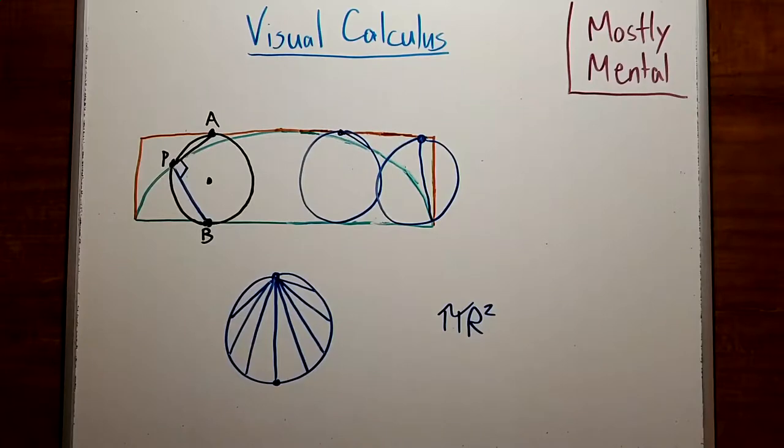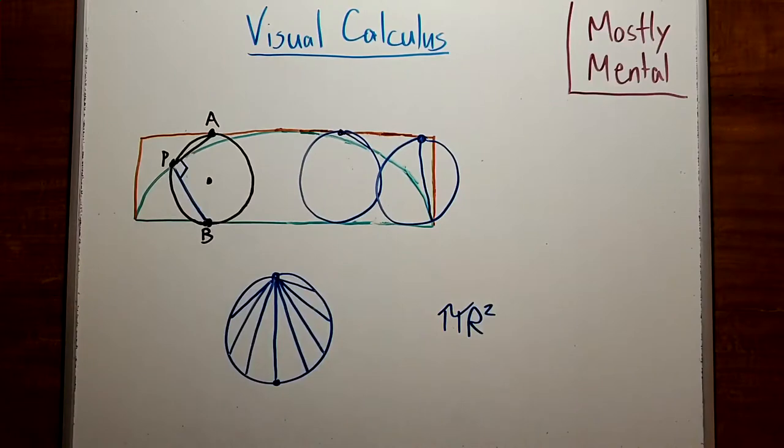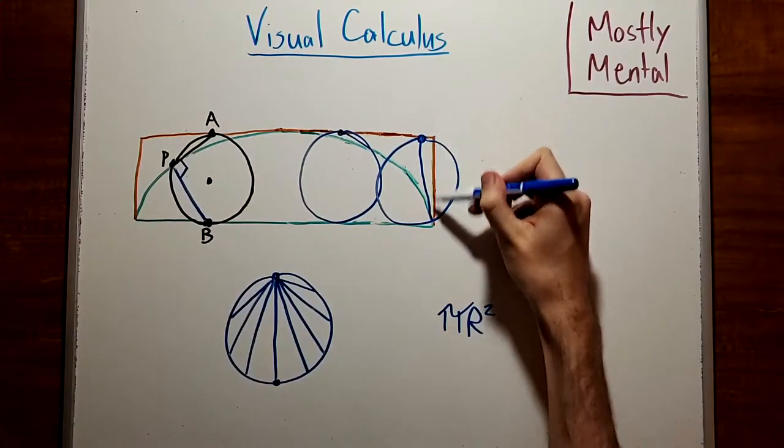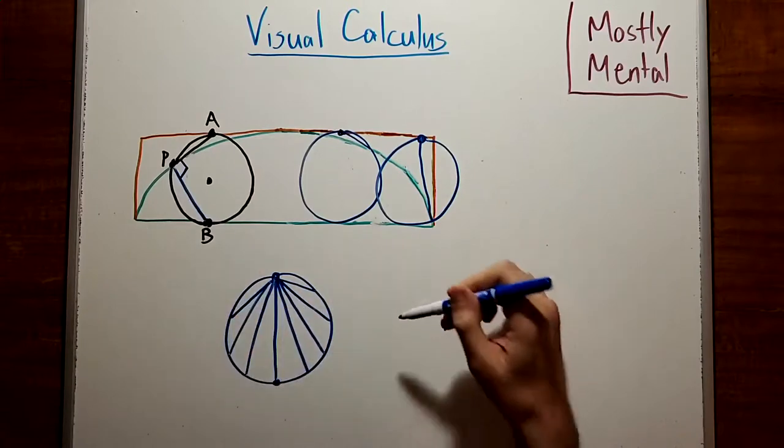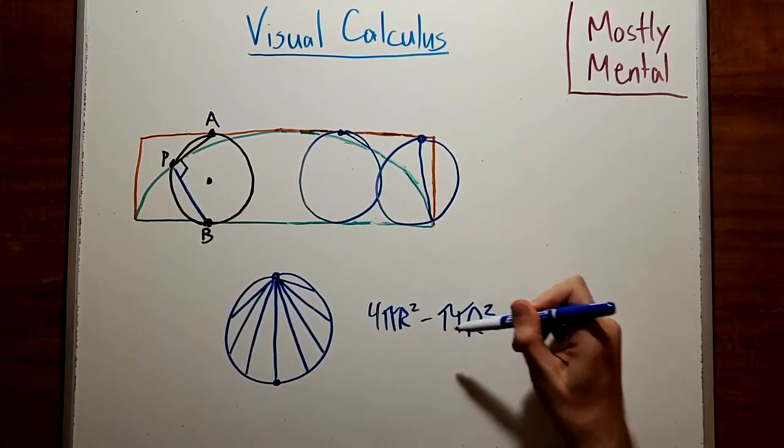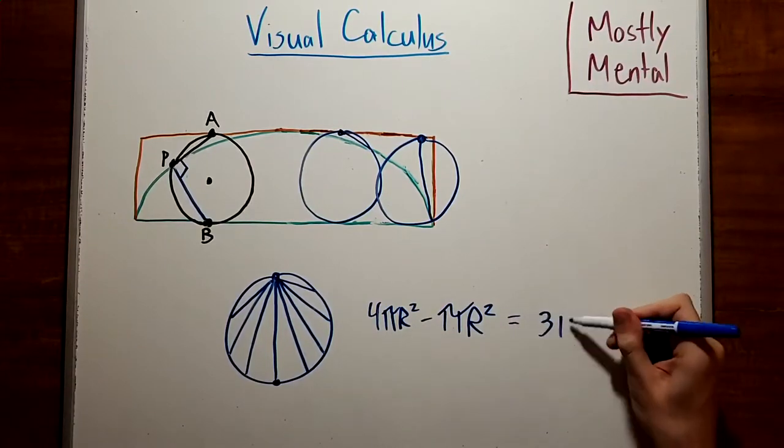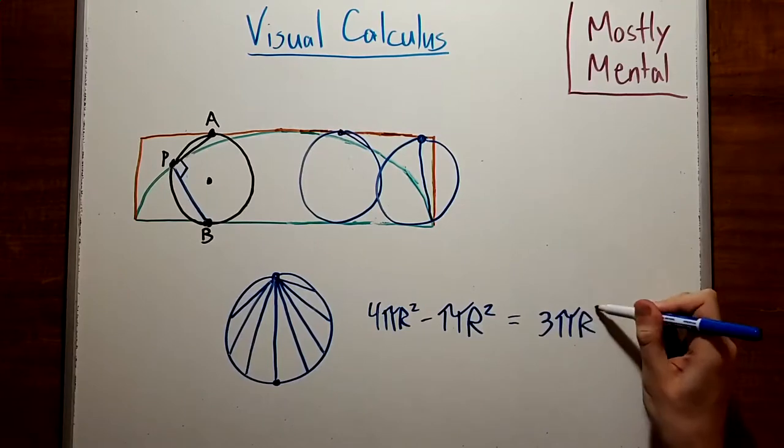And remember, we really wanted the area under the curve, not above it, so we need to subtract this out from the area of the rectangle, which is the diameter times the circumference. So 4π r squared, which gives us a total area under the cycloid of 3π r squared.